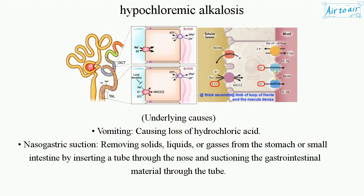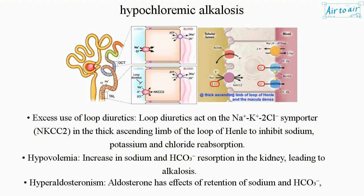Underlying causes include vomiting, causing loss of hydrochloric acid; nasogastric suction, which removes solids, liquids, or gases from the stomach or small intestine by inserting a tube through the nose and suctioning gastrointestinal material; and excess use of loop diuretics. Loop diuretics act on the Na-K-2Cl cotransporter (NKCC2) in the thick ascending limb of the loop of Henle.